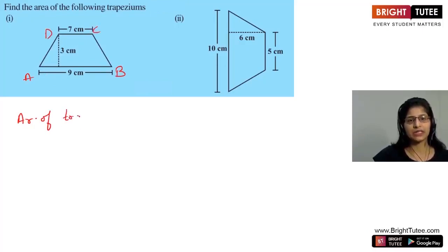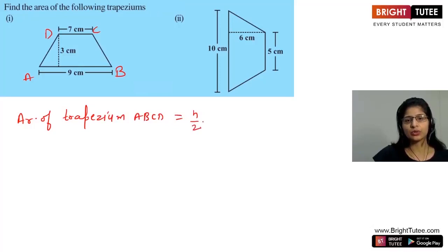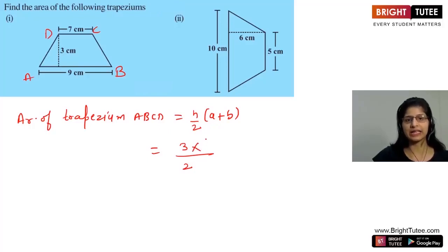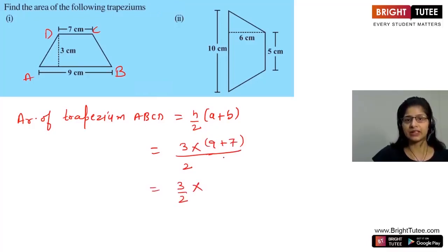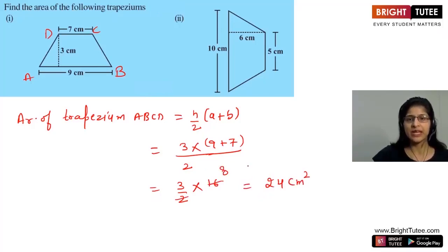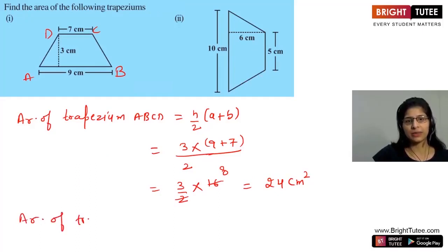Area of trapezium ABCD equals H upon 2 into A plus B. H is the height 3, upon 2, into the two parallel sides 9 and 7. So 3 upon 2 into 9 plus 7 is 16, giving us an area of 24 square centimetres.